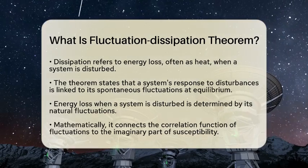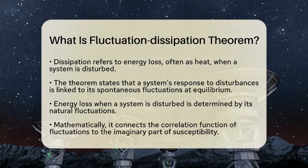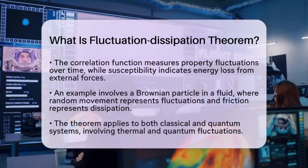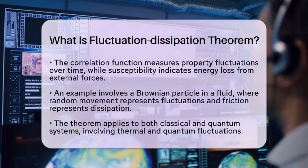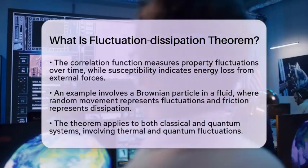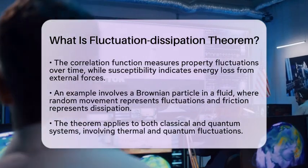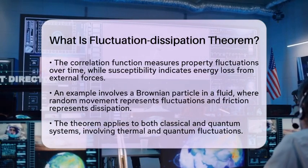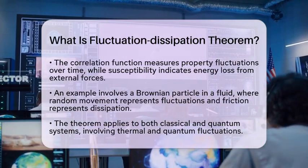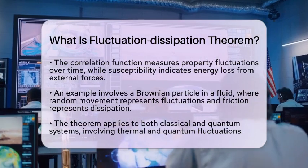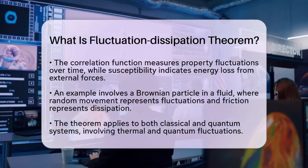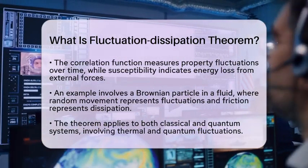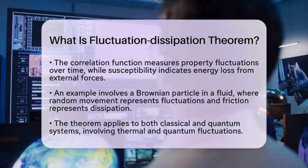For example, consider a Brownian particle moving in a fluid. The random movement of the particle caused by collisions with fluid molecules represents fluctuations. Meanwhile, the frictional force felt by the particle when it is pulled through the fluid represents dissipation.